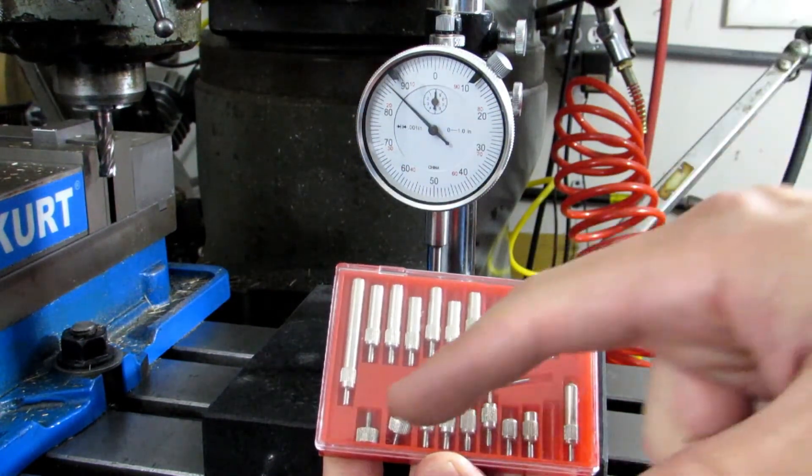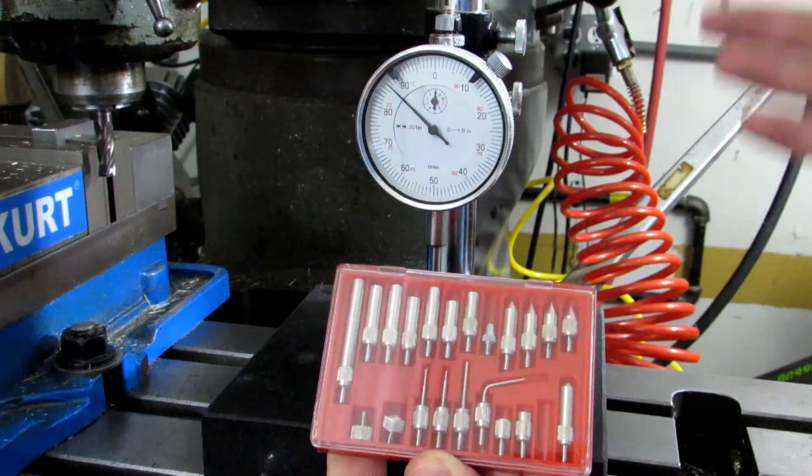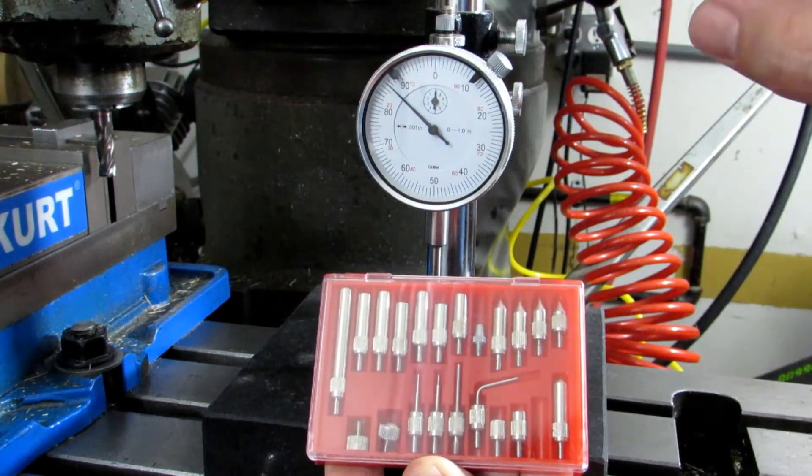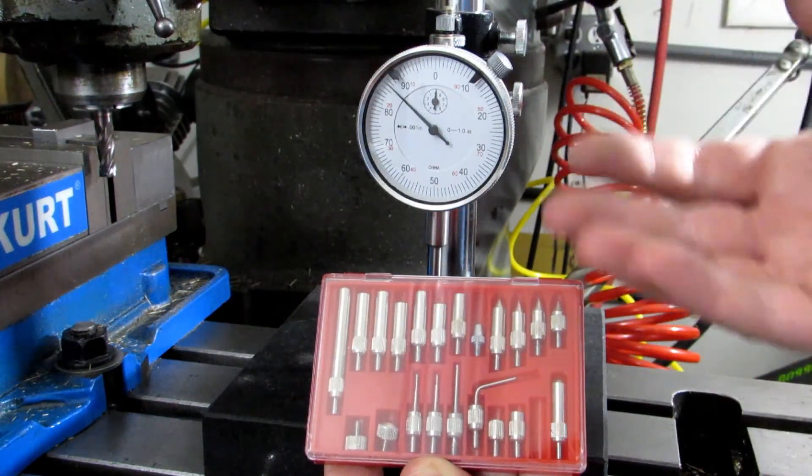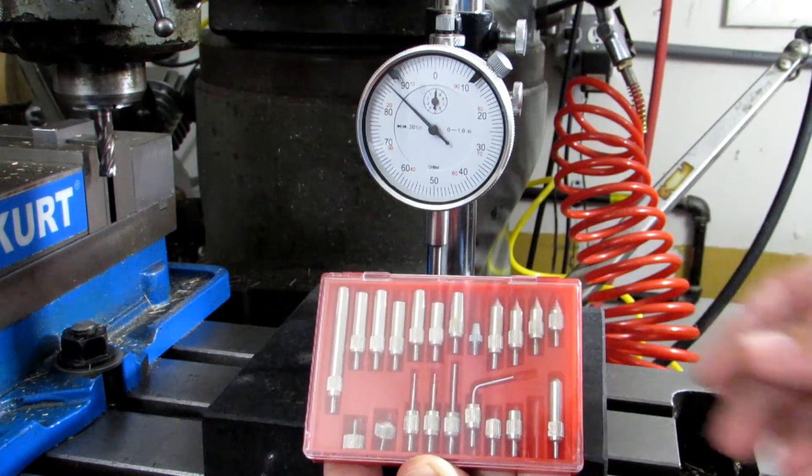I use the flat tips a lot when I'm dialing in things on a four-jaw chuck because there you can be a little above or below center and it's very forgiving, as it would be if you were off center in the four-jaw chuck.